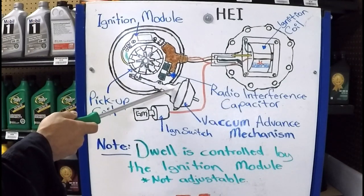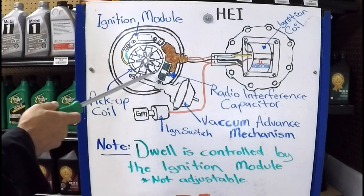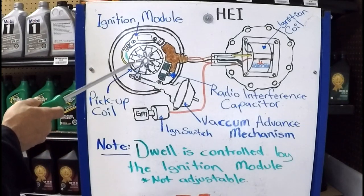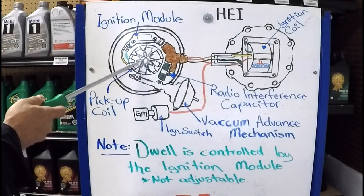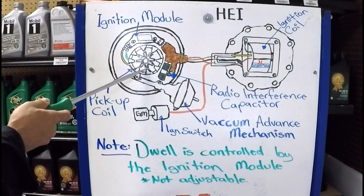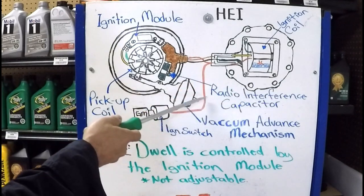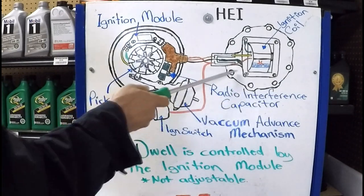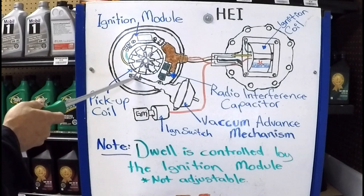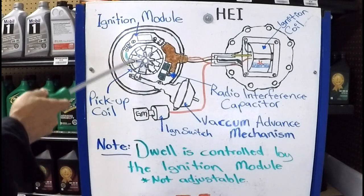Now, the vacuum advance mechanism is going to adjust the timing through the pickup coil by either advancing or retarding the time where these two align. And obviously, this vacuum canister is going to operate through engine vacuum. And as the vacuum signal from the engine increases or decreases, it's going to move an arm, and it's going to adjust the ignition timing.